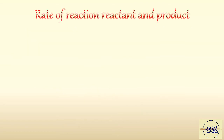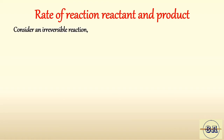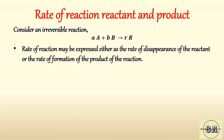Now let's see how we can write the rate of reaction for reactants and products. Consider the irreversible reaction: small a times A plus small b times B gives small r times R. As the reaction proceeds, reactants disappear and products are formed. Hence the rate of reaction may be expressed either as the rate of disappearance of the reactant, or the rate of formation of the product.